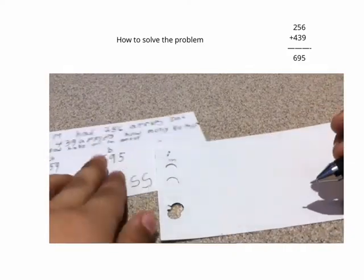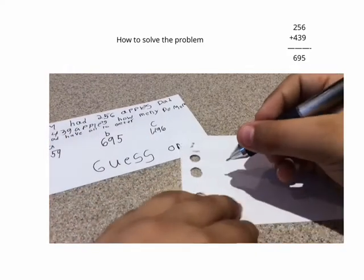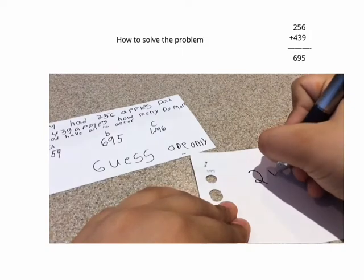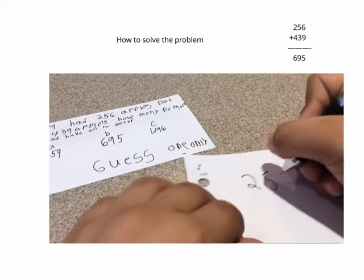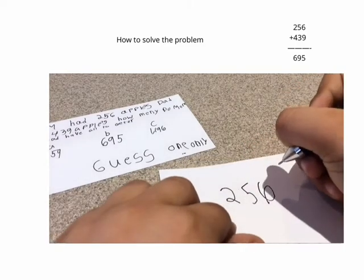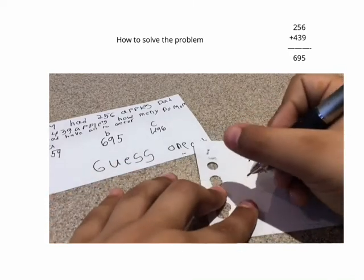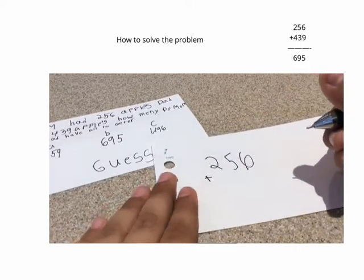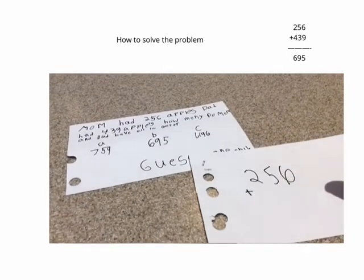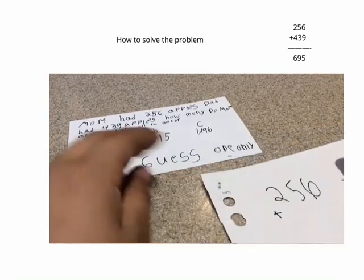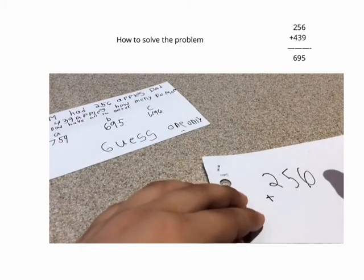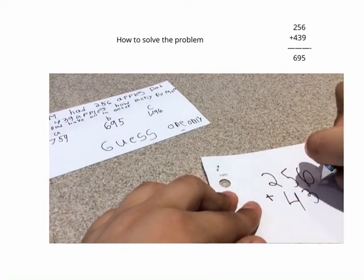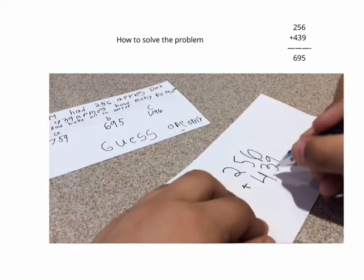So it's 2, 5, 6. 1, 2, 5, 6. Right? 2, 5, 6. Add a little plus sign. Because I'm writing this bad. Okay, I'll write it correctly. Okay. 2, 5, 6. Right? And then you have to write. And then it's 4, 3, 9. Put a line.